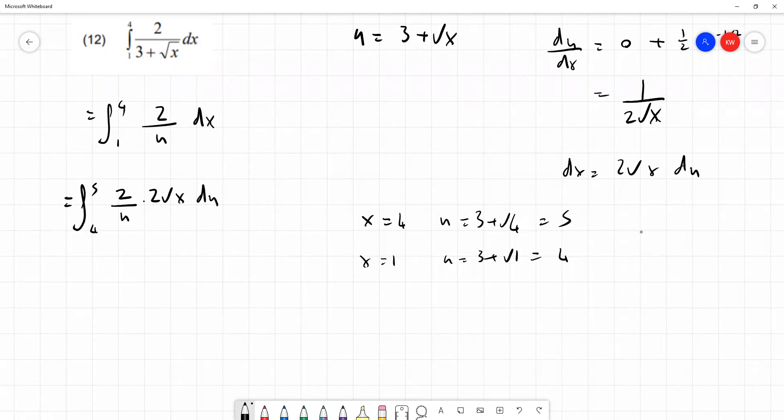We can be clever about this. We know that u equals 3 plus root x. So rearranging, we can find an expression for root x in terms of u. And that is root x equals u minus 3. So we can substitute this for our root x in our expression here. That's exactly what we're going to do.